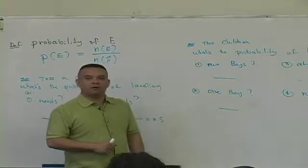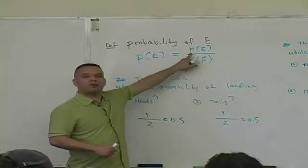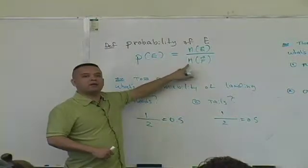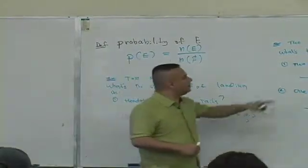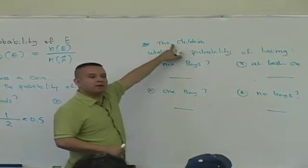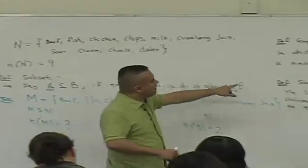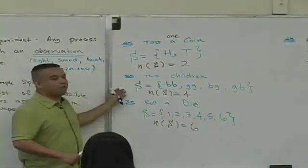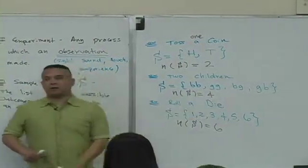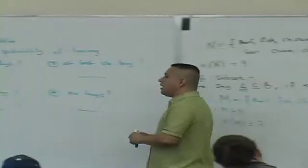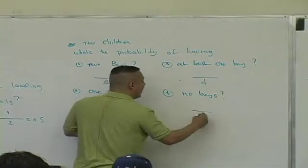What's your definition? You need to know how many outcomes are associated with that event and how many outcomes are in the sample space. What's the experiment? Having two children. The sample space for having two children — how many outcomes are in that sample space? Four. So you know what the denominator is for each one of these questions? Four.